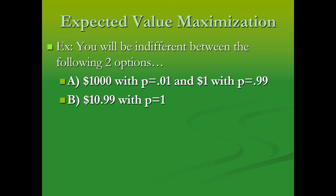With expected value maximization, all we do is follow the math. We multiply our outcomes by the probabilities that they happen, add them together, and see what our expected value is. So with this example here,